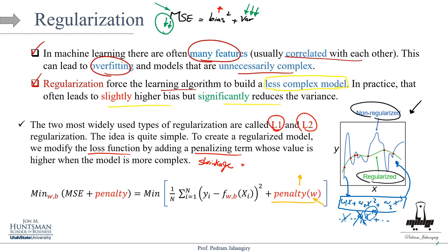There's a trade-off: if you add more features you have more w's, so the penalty term increases. The algorithm automatically tries to reduce the loss function. At some point the penalty increases so much it's not worth adding more features — the amount of bias added dominates the reduction in variance. So the model figures out the trade-off between adding a penalty term and achieving a reduction in MSE. That's how regularization is added to linear regression.